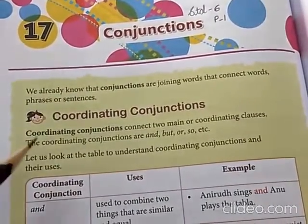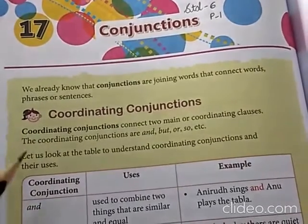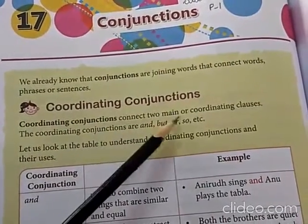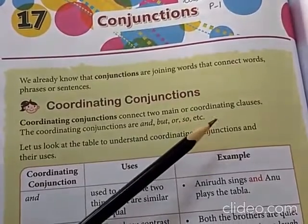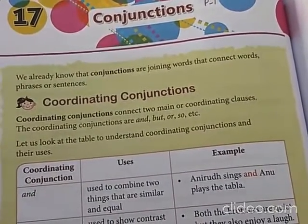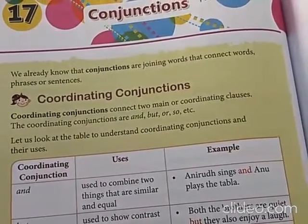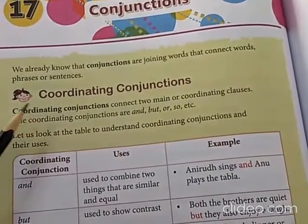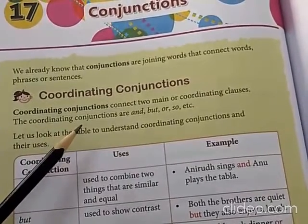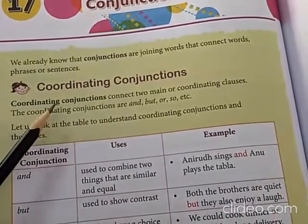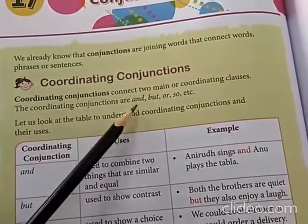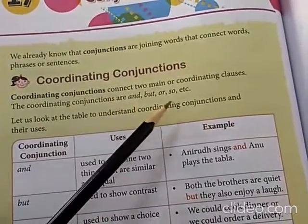Now let us learn what coordinating conjunctions are. Coordinating conjunctions connect two main or coordinating clauses. Clauses are sentences, or part of sentences, which give the whole meaning. The words which connect two or more clauses are called coordinating conjunctions. Coordinating conjunctions are: and, but, or, so, and so on.